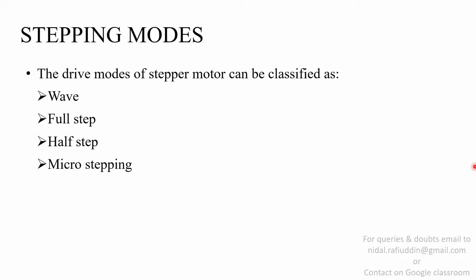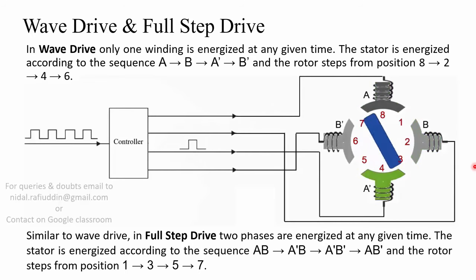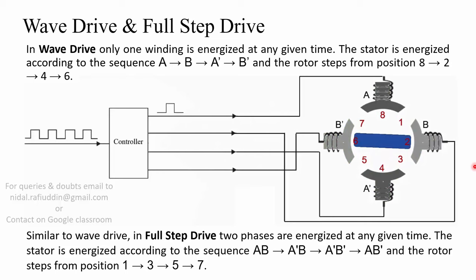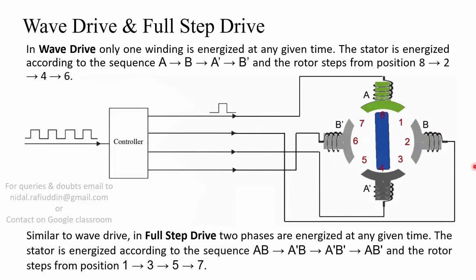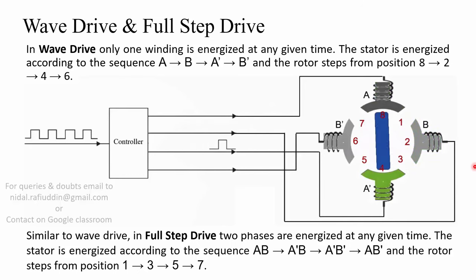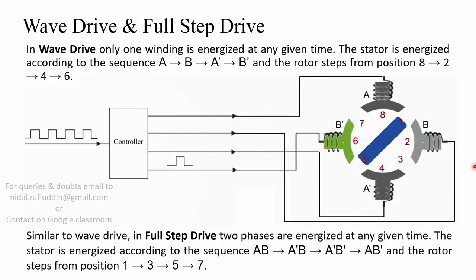The drive modes of the stepper motor can be classified as wave drive, full step drive, half step drive, and micro stepping drive. In wave drive, only one winding is energized at any given time. The stator is energized according to the sequence A, then B, then A-dash, then B-dash, and the rotor steps from position 2 to 4 to 6. In full step drive, two phases are energized at any given time. The sequence followed is AB, then A-dash B, then A-dash B-dash, then A B-dash, and the rotor steps from position 1 to 3 to 5 to 7.